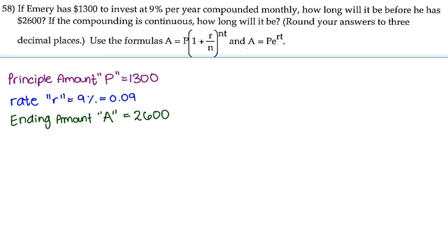What about if it's compounded continuously? Well, if it is compounded continuously, we are going to use the second formula. We're going to use the a equals p times e to the power of rt. So let's go ahead and plug in what we have into this formula. Our a is 2600, our p is 1300.